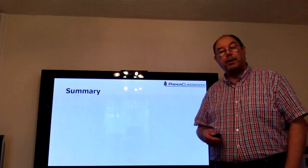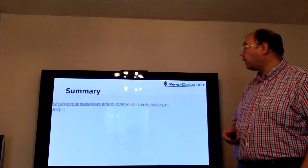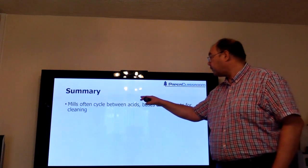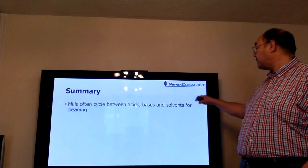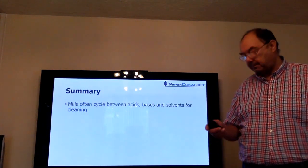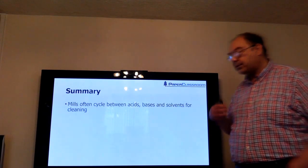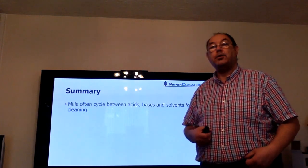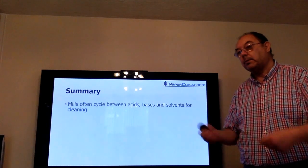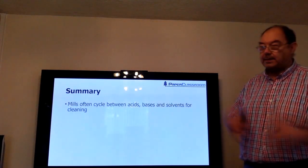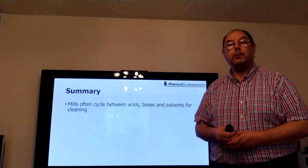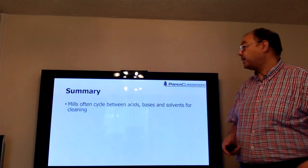So a quick summary of what we've learned in this tutorial. Mills often cycle between acids, bases, and solvents for cleaning. The first time you'll put on some acid showers. Next time you shut down, you'll put on some alkaline showers. Next time you shut down, you'll put on some solvent showers, and then back to acid again.